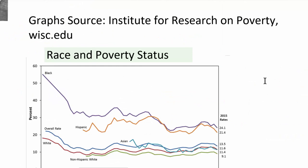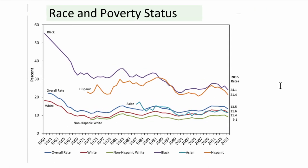Here are graphs from the Institute for Research on Poverty at the University of Wisconsin. Looking at race and poverty status in 2015, people more likely to be in poverty are Blacks and Hispanics — with poverty rates much higher than the general population average of 13–14%. The poverty rate for Blacks decreased dramatically in the 1960s from between 50–60% down to 24% today. Lowest poverty rates are for non-Hispanic whites and Asians.